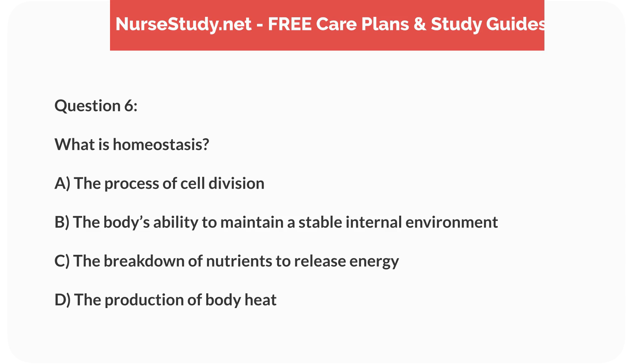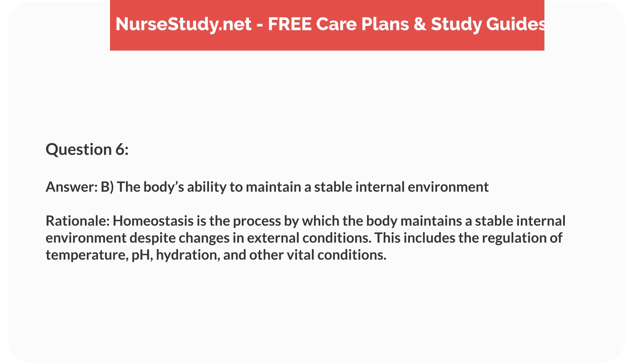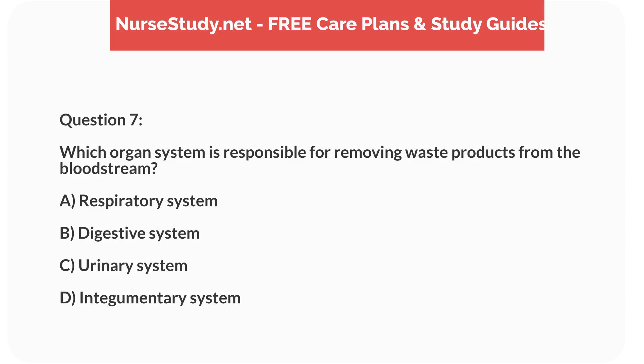Question 6: What is homeostasis? A) the process of cell division, B) the body's ability to maintain a stable internal environment, C) the breakdown of nutrients to release energy, D) the production of body heat. Answer: B, the body's ability to maintain a stable internal environment. Rationale: Homeostasis is the process by which the body maintains a stable internal environment despite changes in external conditions, including regulation of temperature, pH, hydration, and other vital conditions.